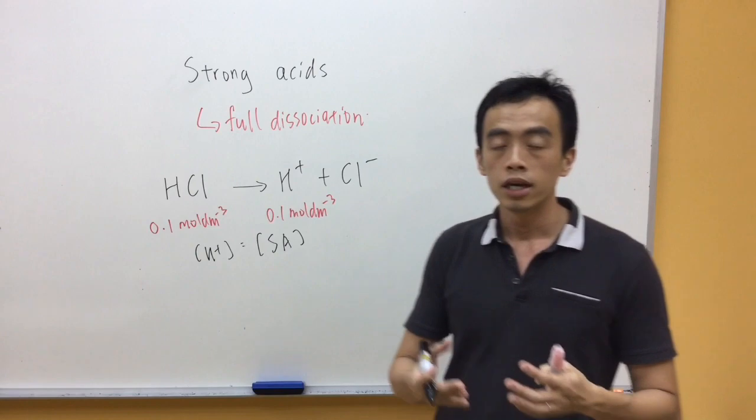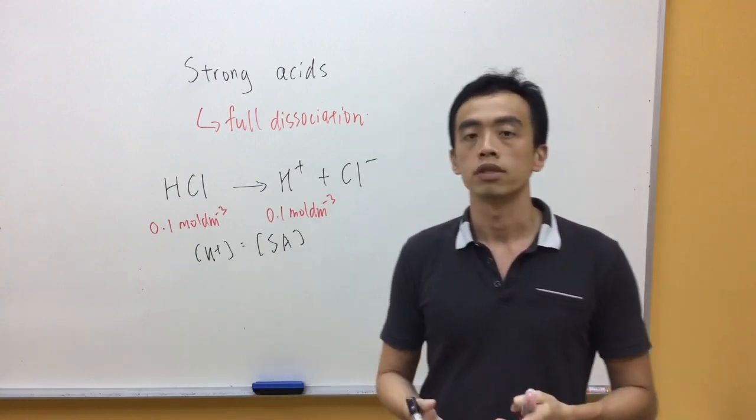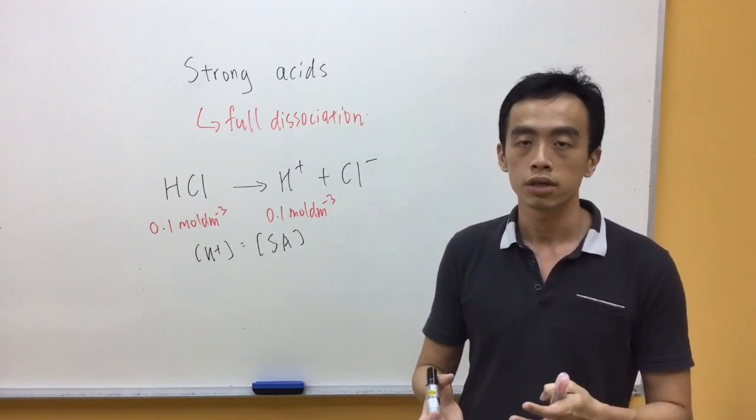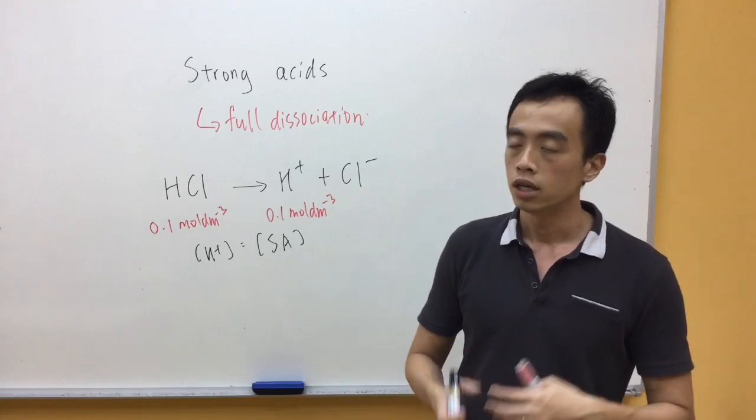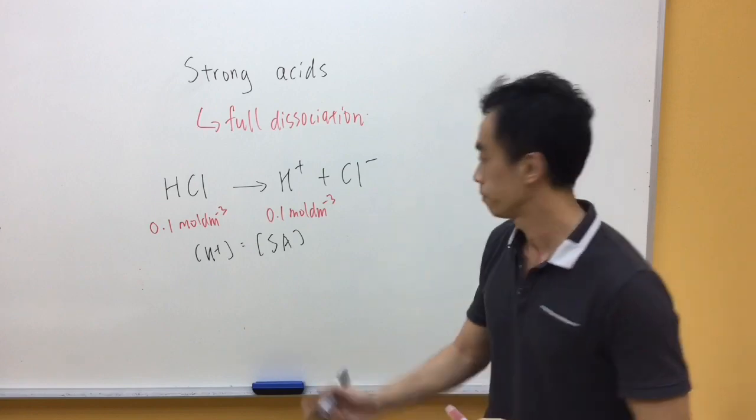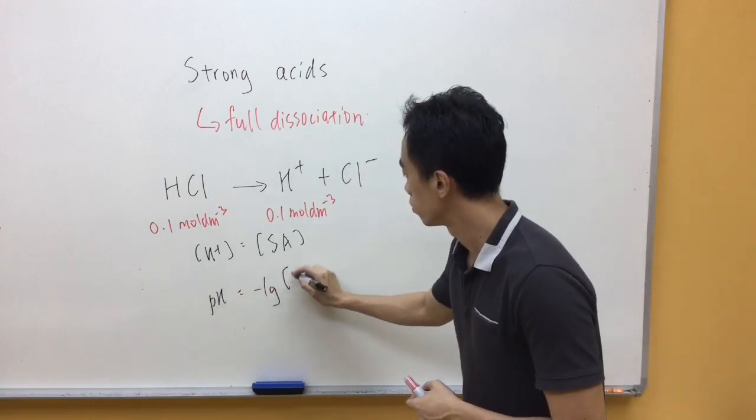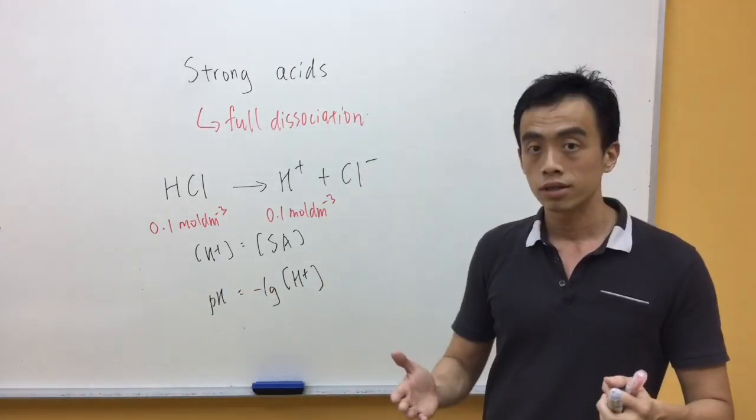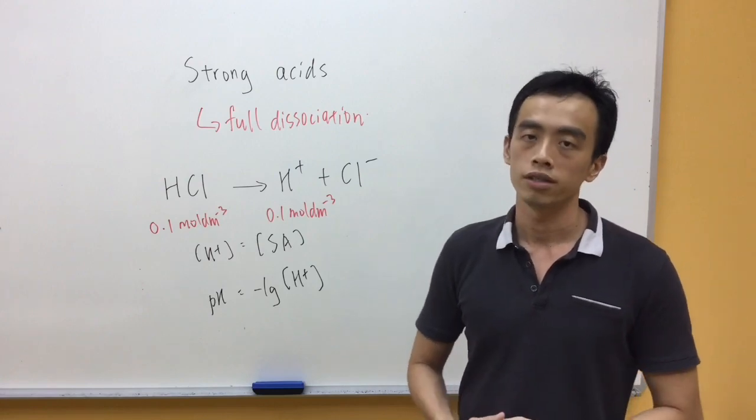Once we have the H plus concentration, then I can find the pH of the solution, because pH is just a function of the concentration of H plus in solution. It's just defined as the negative log of the concentration of H plus. So that's how we find the pH of a solution of strong acid.